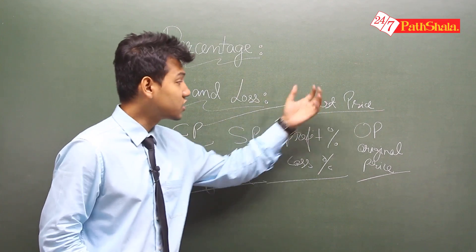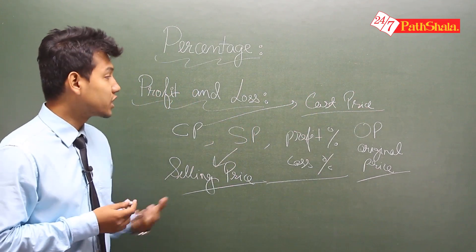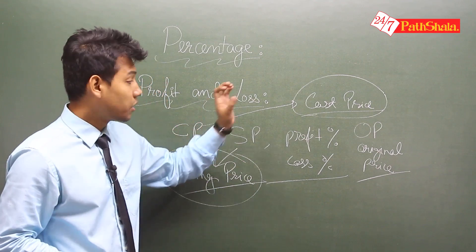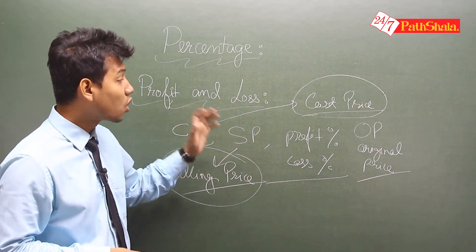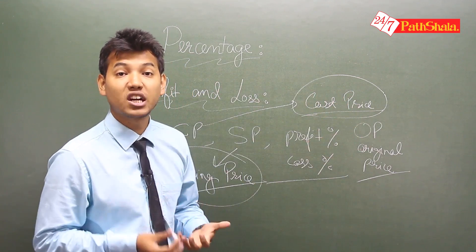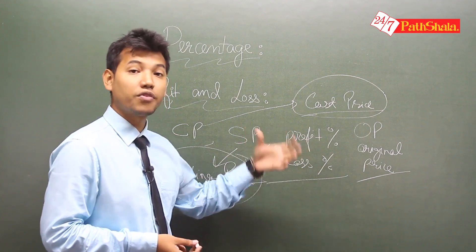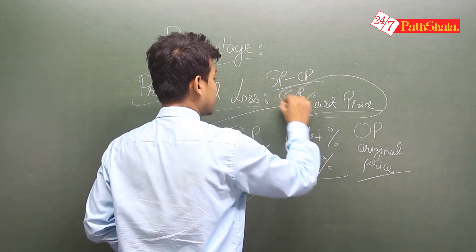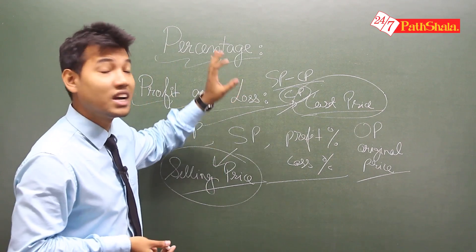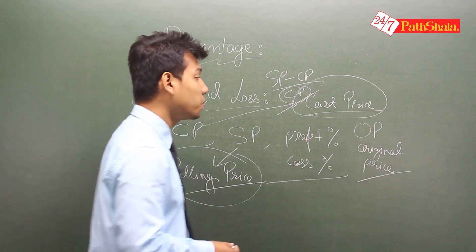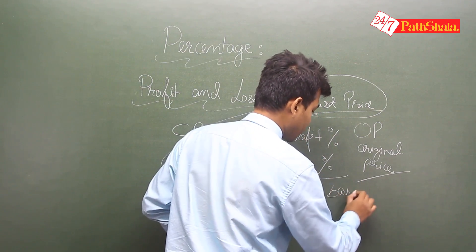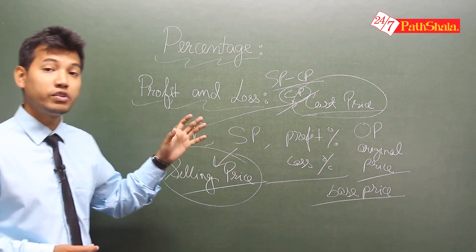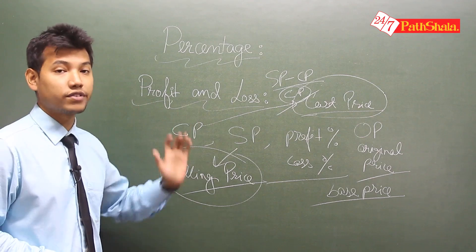When we deal with profit or loss, we compare the cost price with the selling price. The percentage is always calculated with respect to the original price or cost price — also commonly called the base price. So profit percent equals SP minus CP divided by CP, and it's always accounted with respect to the base price.